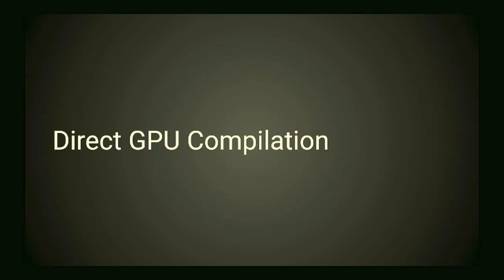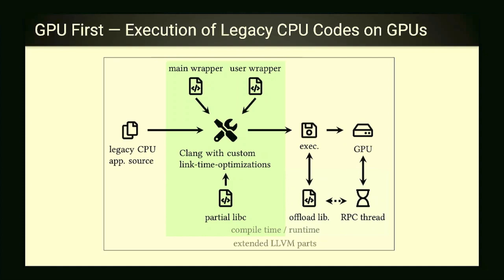Now let's talk about running generic programs on a GPU without concentrating on porting. We call it direct GPU compilation or 'GPU First.' The idea is: take a legacy CPU app as it is, without porting it to CUDA or any GPU language, don't modify it at all, just compile it with our Clang, and you get an executable that runs entirely on a GPU — your main function starts on the GPU and your entire program runs there.